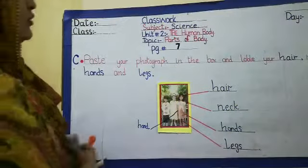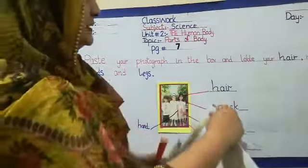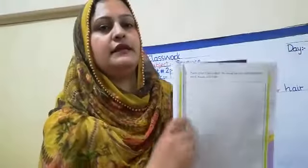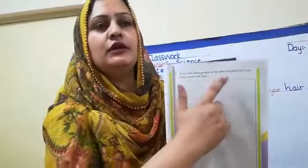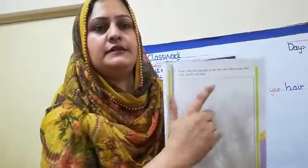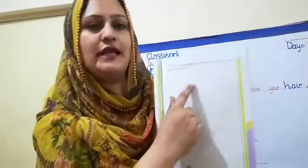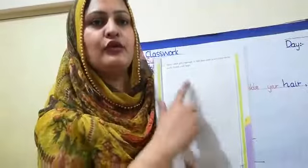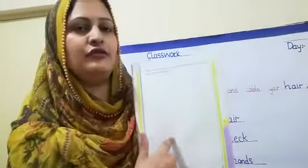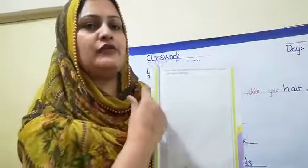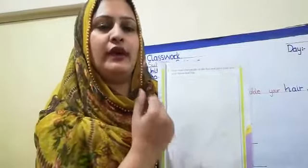Dear students, now open your book page 7. You will have to write the date — C-W and date at the top of the page. And then you will have to paste your picture. Full picture, not only face — the full photograph. And then you will have to label like we have done on the whiteboard.